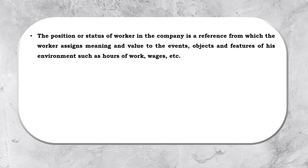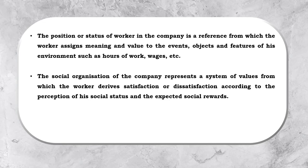Which means to say, that if there is a blue collared employee, he will expect that he works for a certain amount of time and gets paid for the work he does. Whereas, the top level employee will have different references and different expectations for his kind of work. The social organization of the company represents a system of values from which the worker derives satisfaction or dissatisfaction according to the perception of his social status and the expected social rewards.